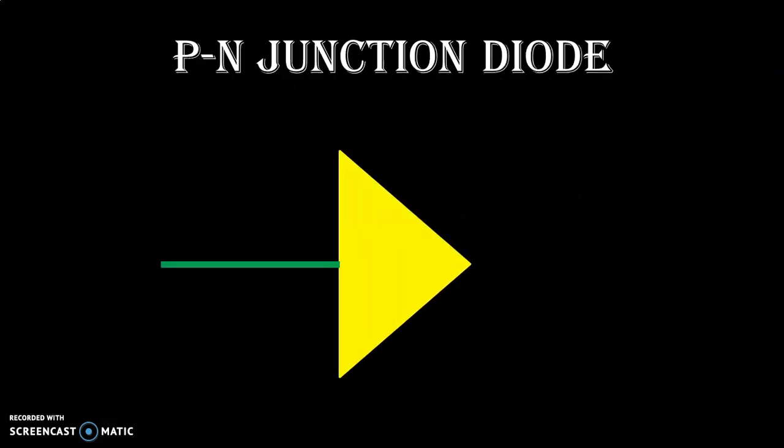PN Junction Diode. It has two terminals: anode and cathode.